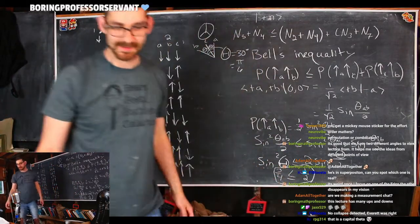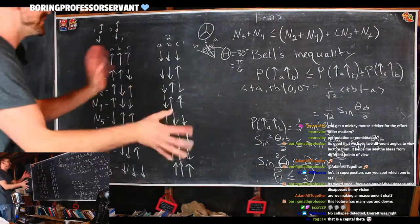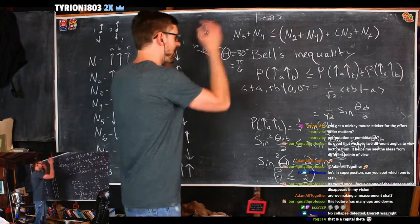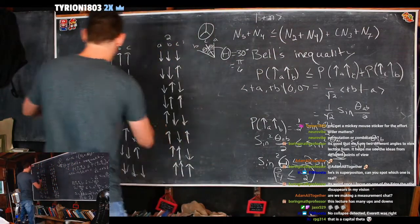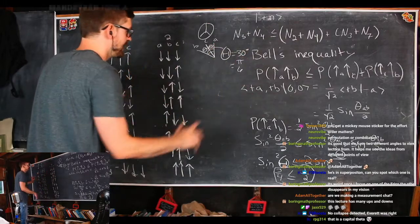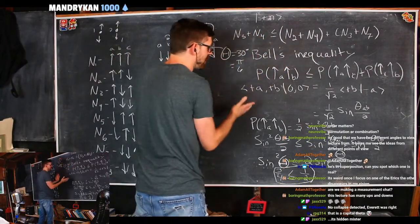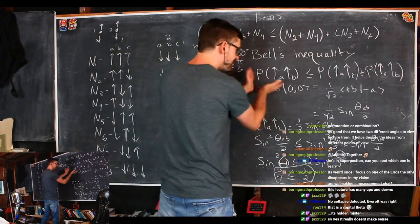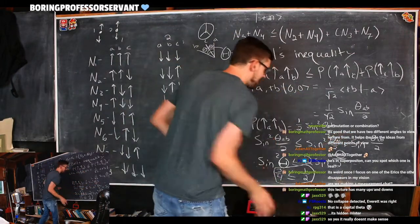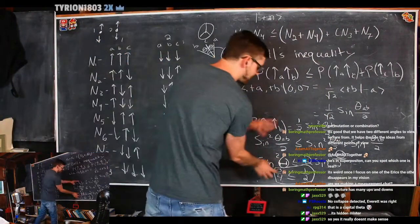Three fourths cannot be less than or equal to one half — that makes no sense. We have two different methods showing that the probabilities of spin-up/spin-down measurements are inconsistent. The classical inequality is straightforward, the QM inequality is straightforward, but they contradict each other. When you do it quantum mechanically, the inequality is violated.